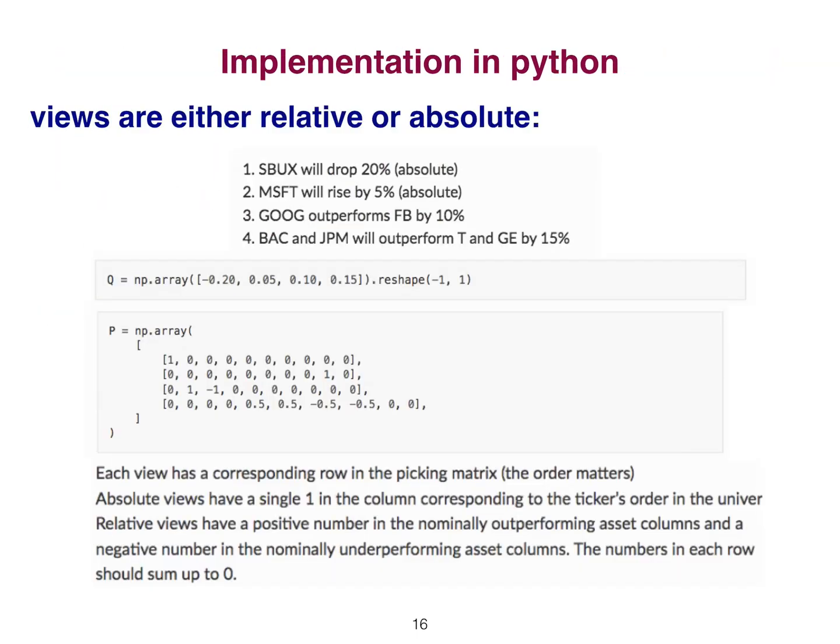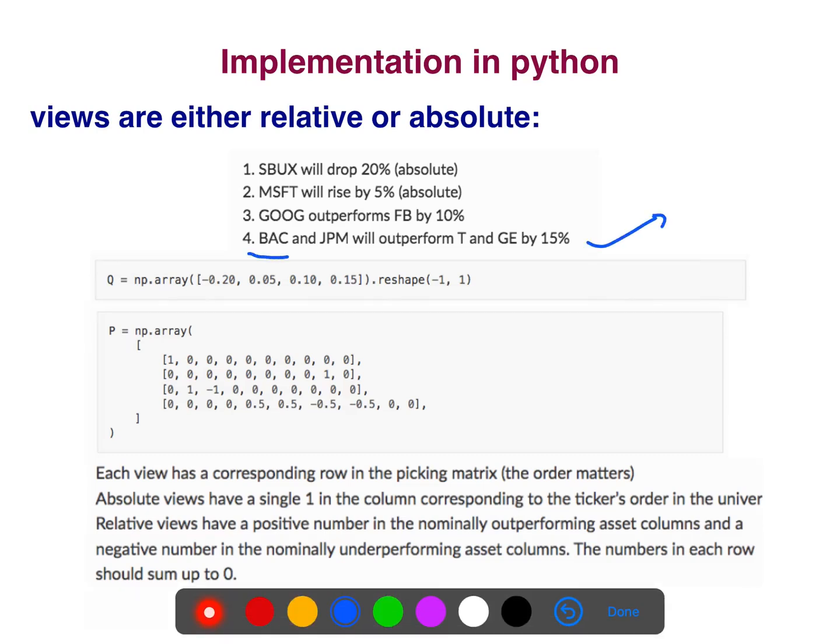So, implementation. Views are either relative or absolute. For example, you use a relative view here. BAC and JP Morgan will outperform Tesla and GE by 15%. For example, they used some statistical arbitrage. You short one asset and you long the other asset. So, it's a relative view. But sometimes, you use technical analysis. For example, say here is a retracement and then you go on and use some Fibonacci. So, you use some absolute values, or even absolute value from historical data. You have the distribution of that.